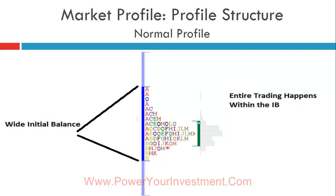If volatility is high and the initial balance is wide, you want to trade assets with higher beta. For a low-beta stock like ITC with a wide initial balance and high VIX, the probability of breaching is low compared to higher-beta names like JP Associates, SBI, or ICICI Bank. I'll cover integrating market profile with conventional technical analysis much later — around the tenth part — including aspects I believe are missing from existing literature.